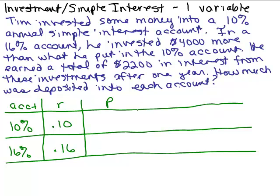Now what about the principle? So we have to read through this again. Tim invested some money into a 10% annual simple interest account. So we don't know how much money, so let's go ahead and just let that be x, however much money that happens to be. In a 16% account, he invested $4,000 more than what he put in the 10% account. Okay, so if you put x amount of dollars in the 10% account, and he invested $4,000 more in the 16% account, then we'd have x plus $4,000 invested in the 16% account, right? So however much he invested here plus an extra, be careful, just don't put 4,000, right? We don't know how much is in there, all we know is it's 4,000 more than was invested in this first account at 10%.